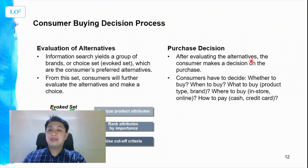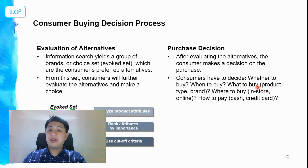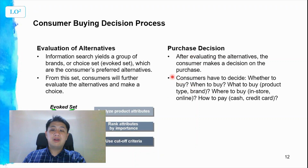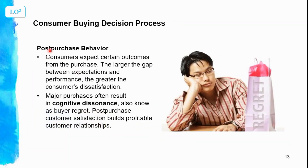After evaluating the alternatives, the consumer makes a purchase decision. This involves many choices: whether to buy at all, when to buy, what brand to buy, where to buy — in-store or online — and how to pay, whether by cash, credit card, or mobile payments like GrabPay. This is the point where the consumer finally decides and commits to the purchase, so businesses need to take care of this stage carefully.